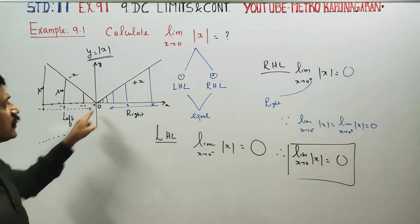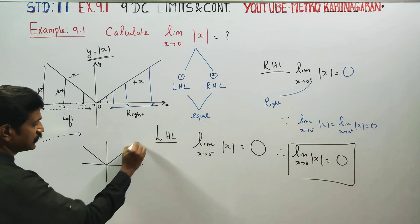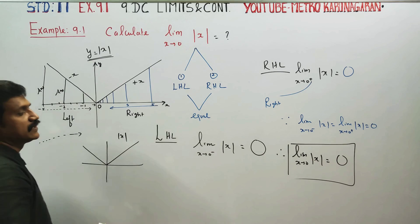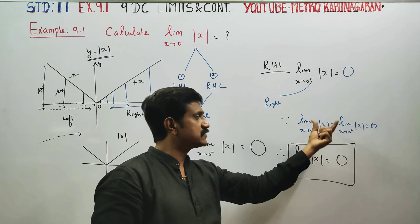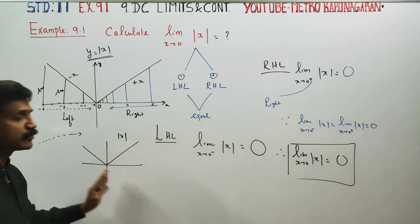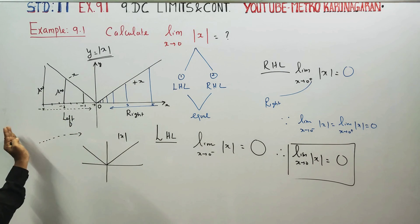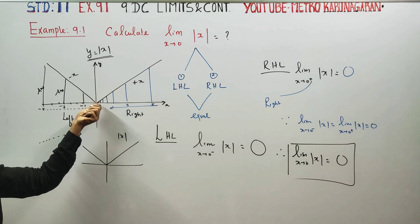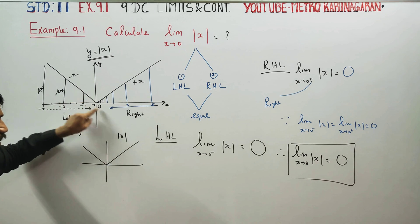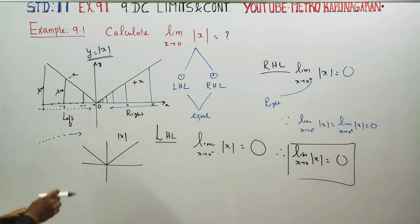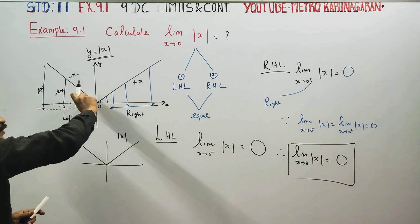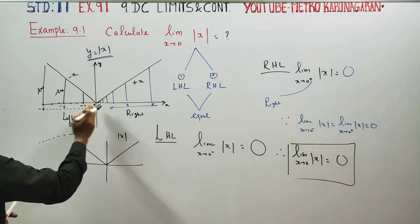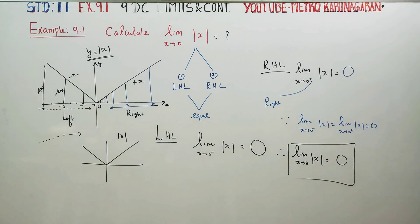Just two more questions. This is step number one, step number two, step number three, step number four. We have to answer the right-hand limit. The diagram is not compulsory for the examiner. Left-hand limit and right-hand limit are equal — that's why the final answer is 0. Limit as X turns to 0 plus, modulus of X equals 0, is your final answer.